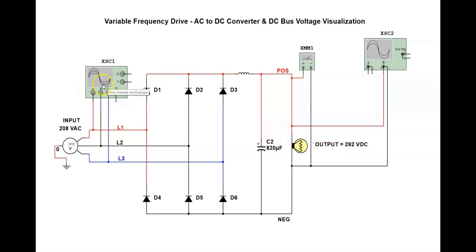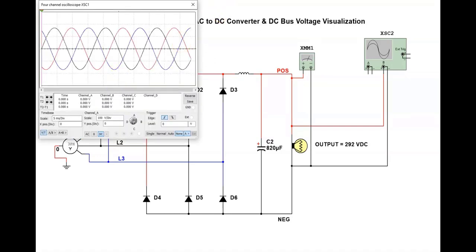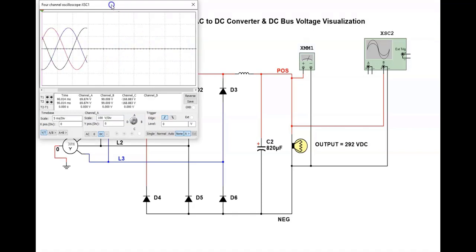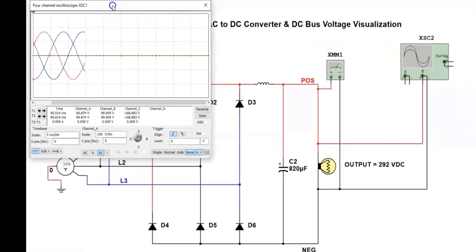I have an oscilloscope connected to the three lines that feed the converter section. Let's have a look at the trace and what you'll notice is we have three waveforms, each one of those is 120 degrees apart.